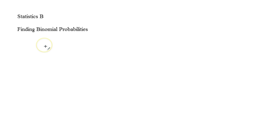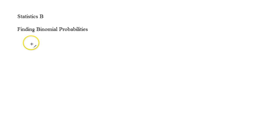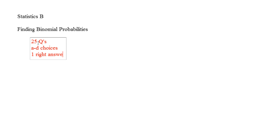Alright, so for finding binomial probabilities, this is going to be a lot of cool stuff that we're going to be working with. So binomial probabilities — we're going to put everything together and start to look at it. Let's say you were taking a test and you had 25 questions. The test had 25 questions, A through D choices, and there was only one right answer per question.